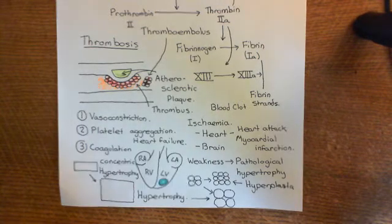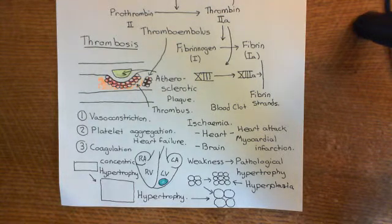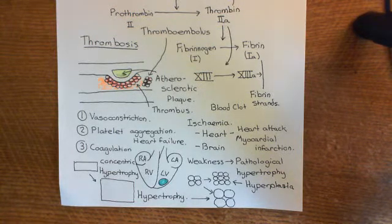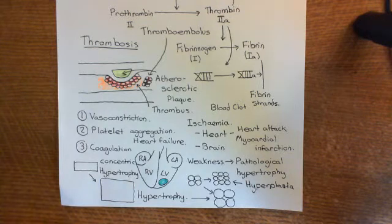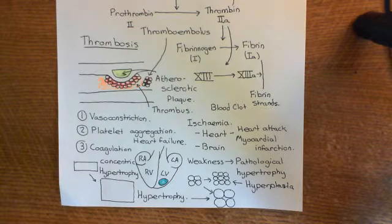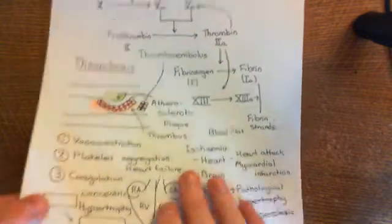Thrombosis is just hemostasis occurring in a blood vessel where you don't actually have a hole in the side of it. We'll start off with drugs which can be used for clot lysis. If you actually have a thrombus within your blood, there are certain drugs which can be used to destroy that thrombus. They're often given to people who are suffering from occlusive strokes, if it is believed that the thrombus might still be present within the blood vessel and therefore still blocking blood flow to a certain portion of the brain.